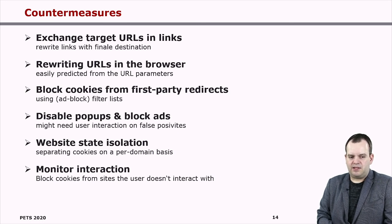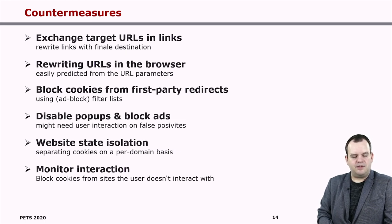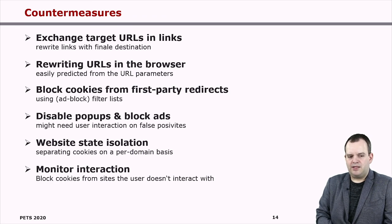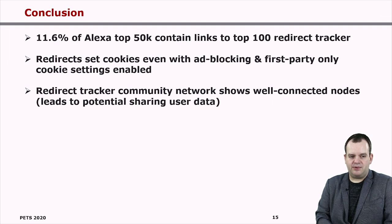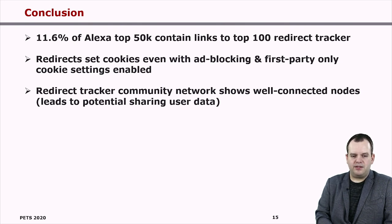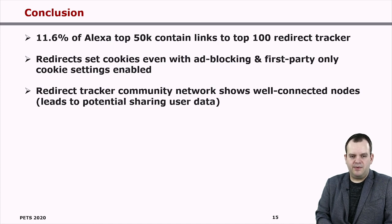The most creative approach is probably what Apple is doing with Safari: they monitor interaction with websites. So when you go through a redirect tracker that simply forwards you, but you never interacted with any element from that redirect tracker — by clicking on something or scrolling — then cookies from those domains are deleted after a while. To conclude, we found that 11.6% of the Alexa top 50,000 domains contain links to the top 100 redirect trackers. Those trackers are able to set cookies in your browser even when you configured it to accept first-party cookies only and have ad blocking enabled, giving them huge potential for tracking compared to typical third-party trackers. And those trackers form a kind of community network, meaning they could potentially share their data, which makes them even more dangerous.